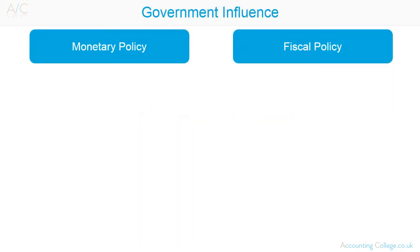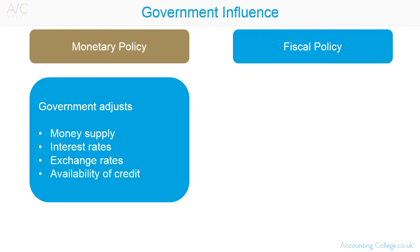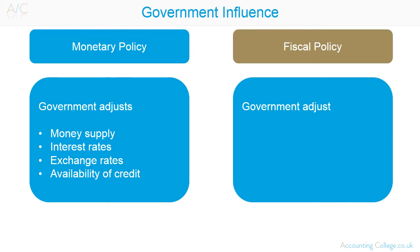Government macroeconomic policies like monetary policies and fiscal policies impact an organisation and need to be analysed. Monetary policies are where the government adjusts the money supply, interest rate, exchange rates and availability of credit. Fiscal policies are where the government adjusts taxation, public spending and public borrowing.